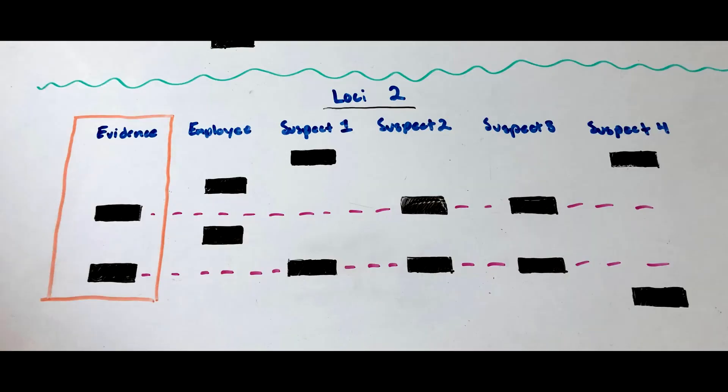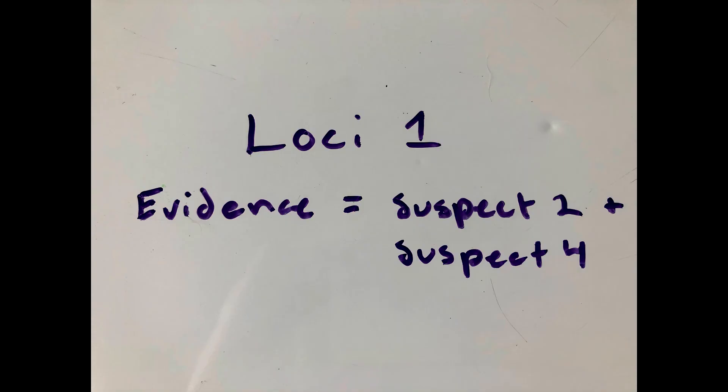The evidence could not have been left by suspect 4 because the bars did not match. So who left the DNA at the crime scene?